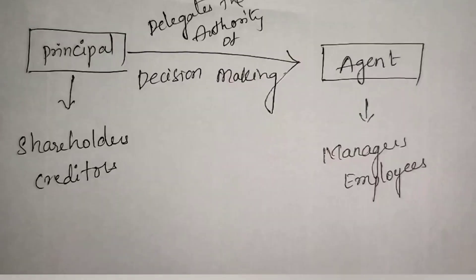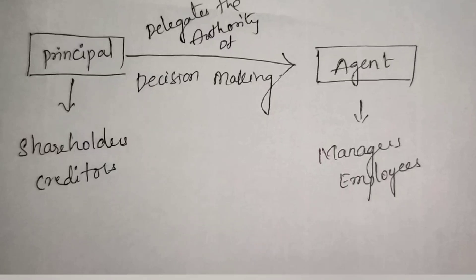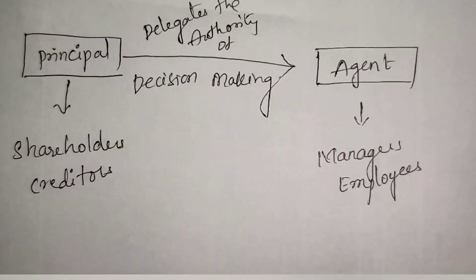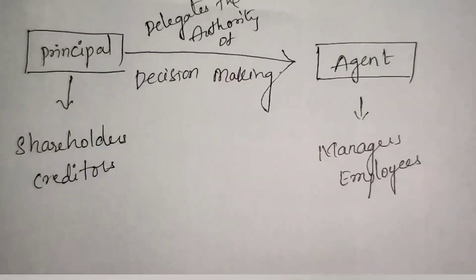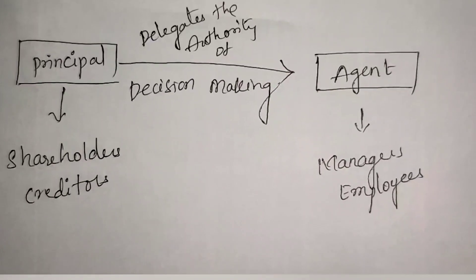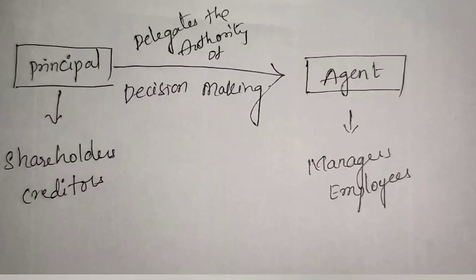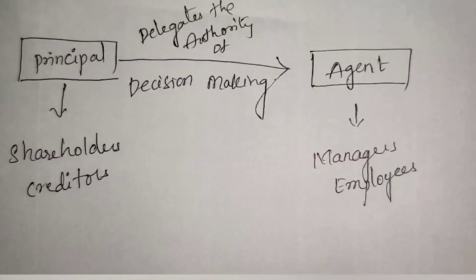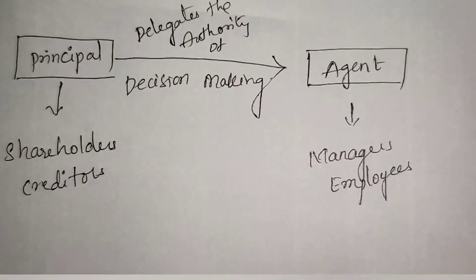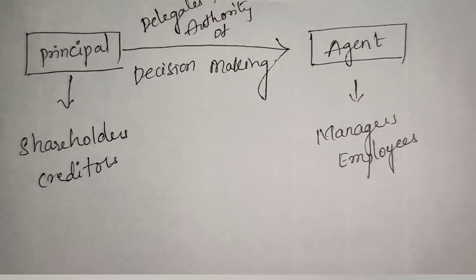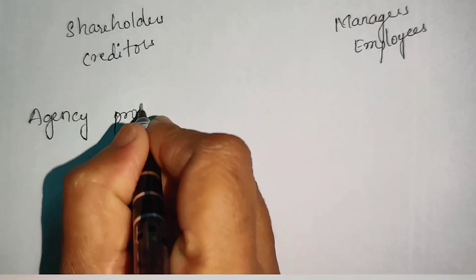Whereas when it comes to agents, they think of their own motivating factors and their goals will be different. They think of things like job security, power, status, and compensation package. If anything goes different between these thought processes, ultimately a conflict arises. That conflict is currently considered as the agency problem.